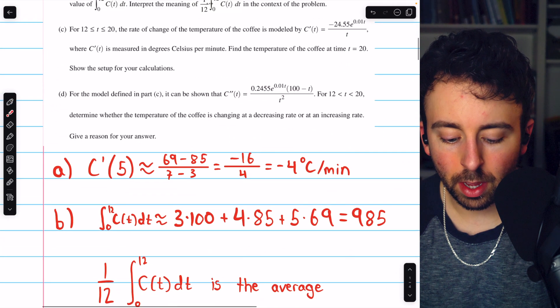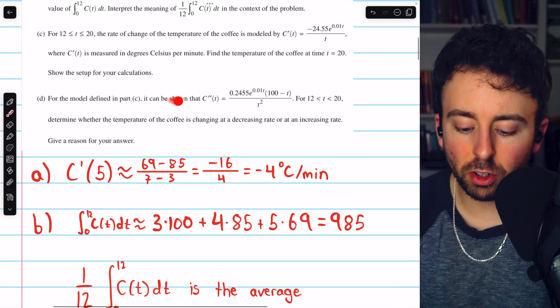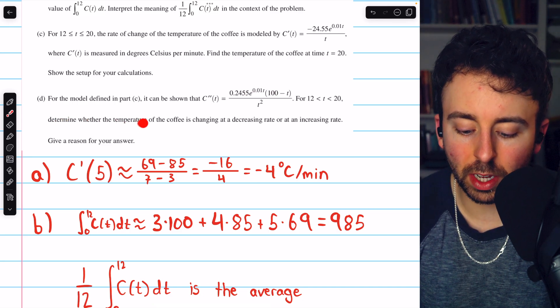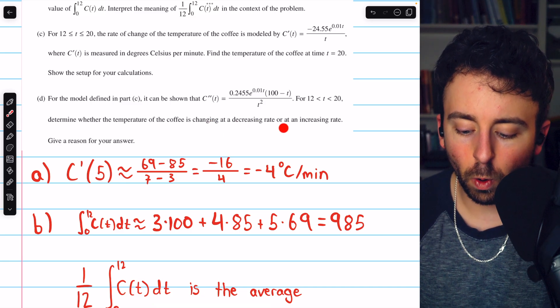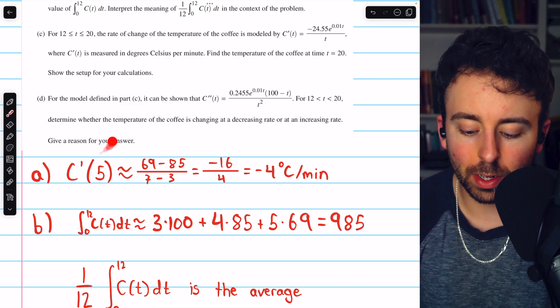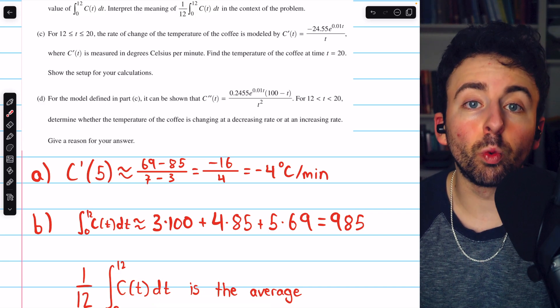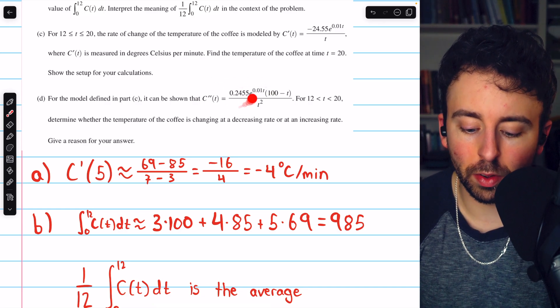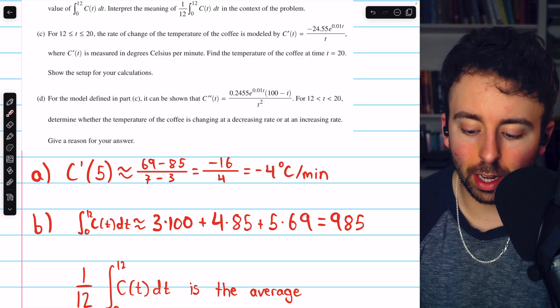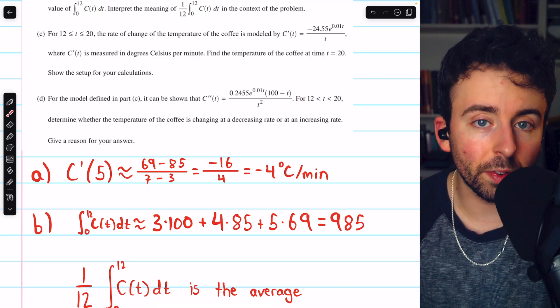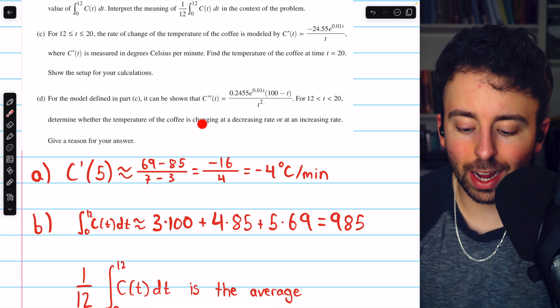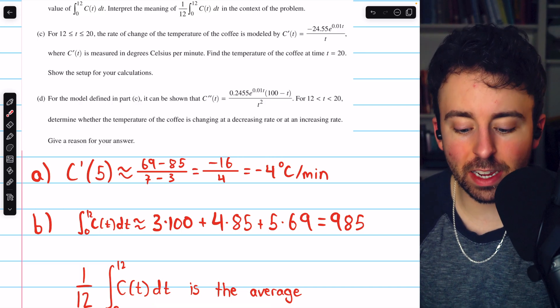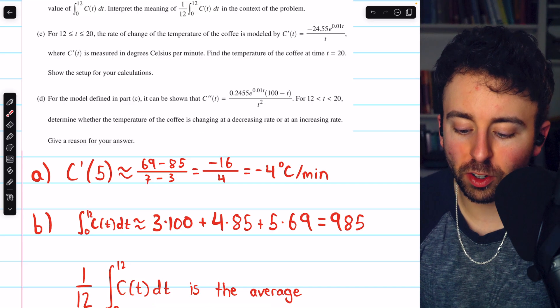Finally, moving on to part d, for the model defined in part c, it can be shown that the second derivative equals this expression here. For t between 12 and 20, determine whether the temperature of the coffee is changing at a decreasing rate or at an increasing rate, and give a reason for our answer. We know that the rate of change of the change of the temperature is described by the second derivative. So if this derivative is positive in this interval, that means the derivative is increasing. And so the temperature would be changing at an increasing rate. If the second derivative is negative, then the first derivative is decreasing. And so the temperature of the coffee would be changing at a decreasing rate.